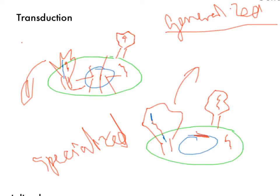An easy way to think about what transduction is: think about 'trans' meaning across — the movement of DNA across. Think about transduction as having a little duct on the bacteriophage. That's an easy way to remember it — there's a little duct on the bacteriophage. So: the movement of DNA across, through the duct.